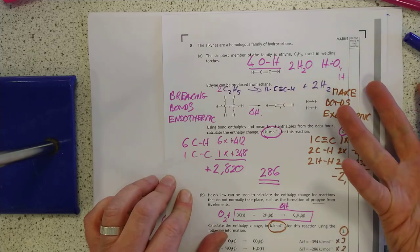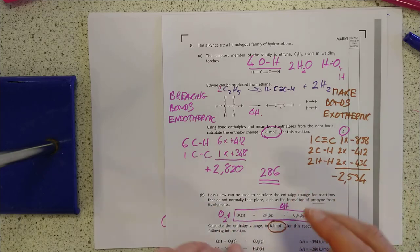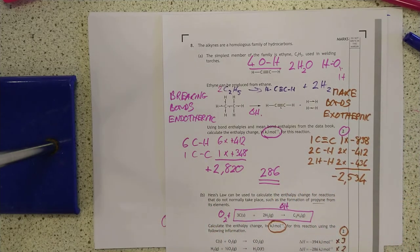Making bonds, when they reform, the energy pops back out again. So these are all negatives. These are positives. Put them together. There's your answer. There's your two marks.